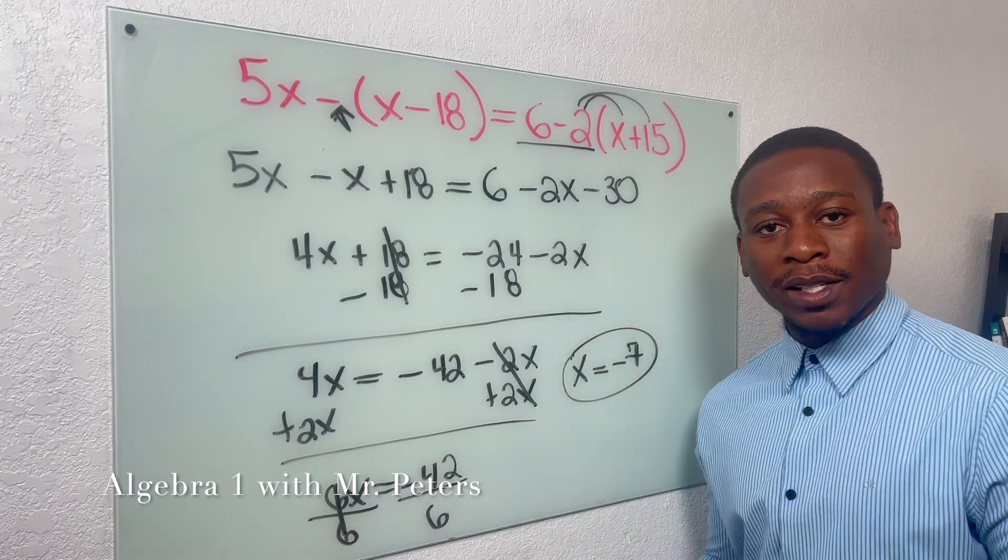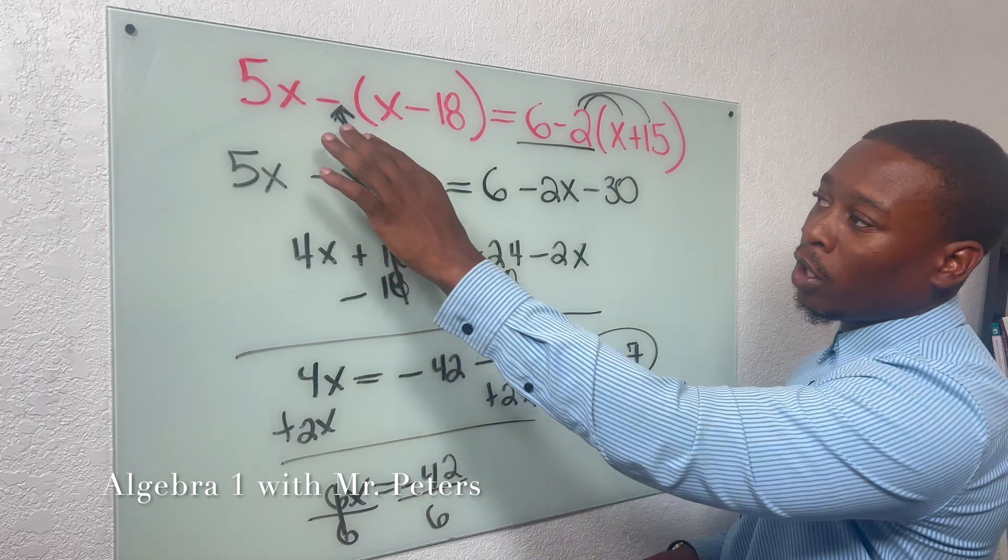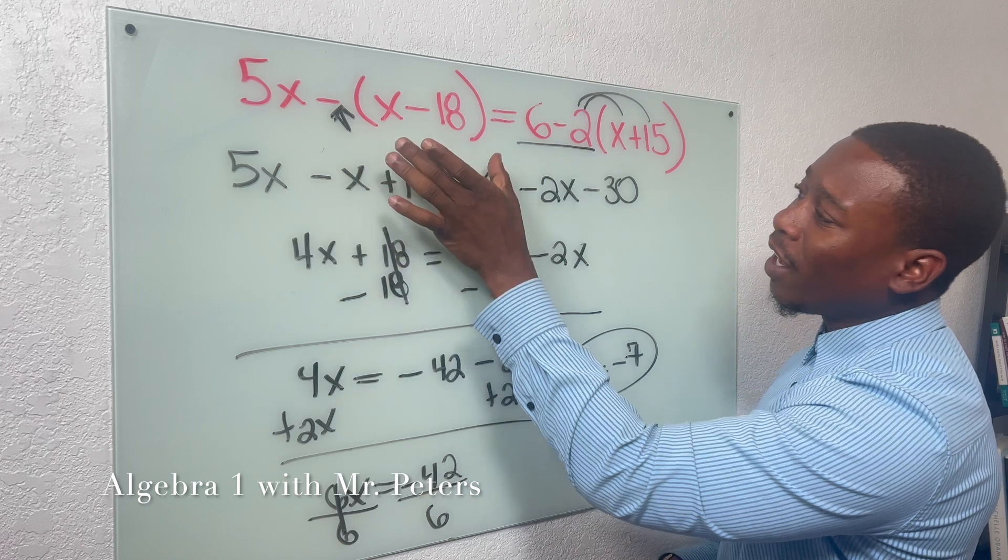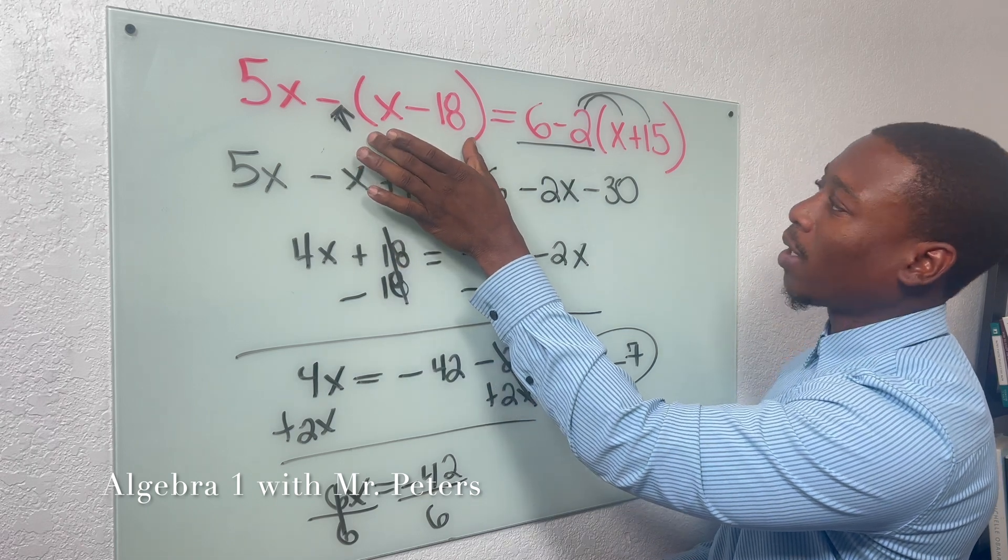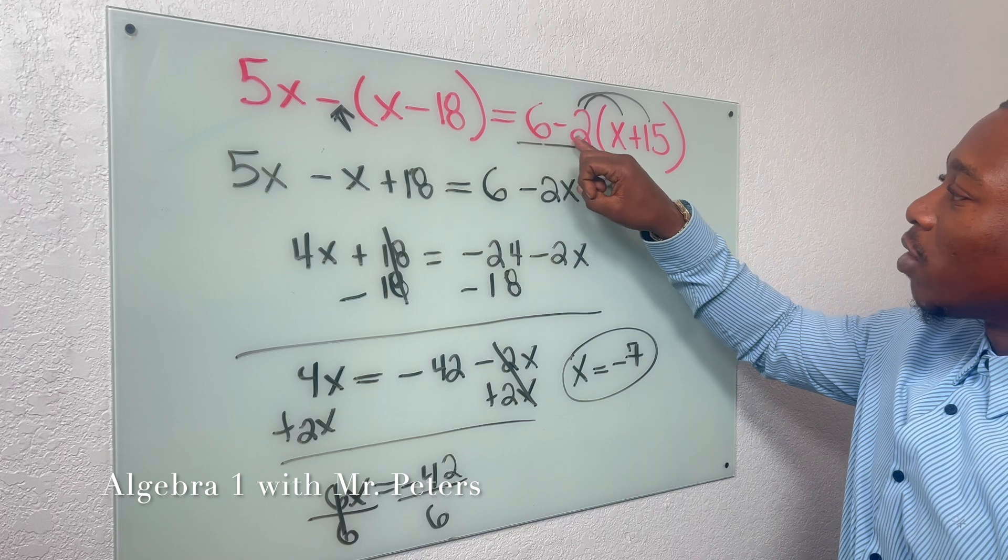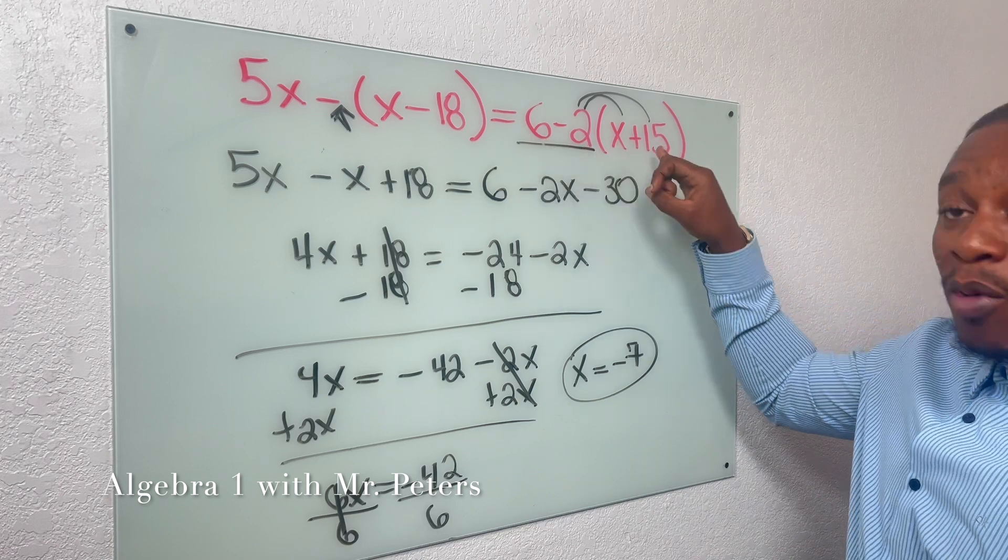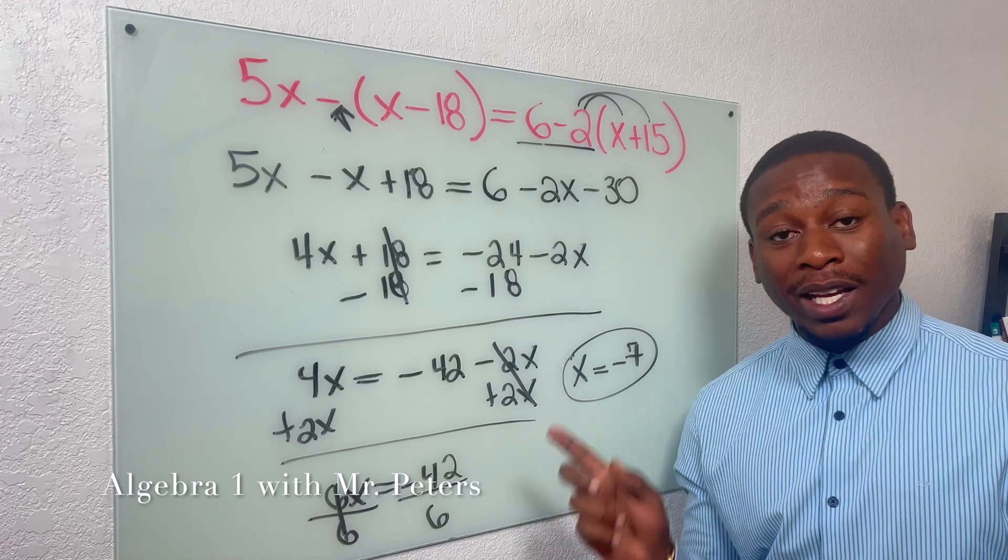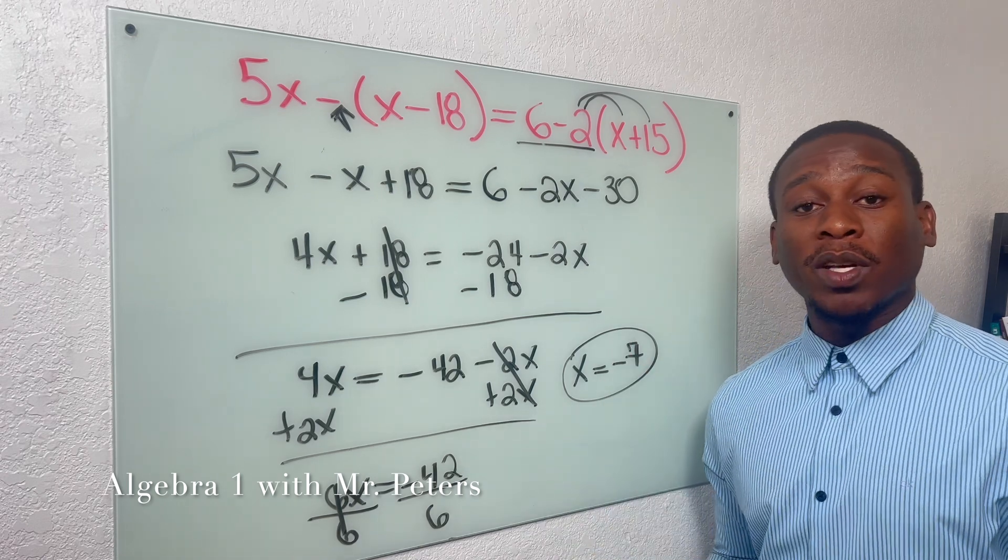So just remember, in this second example, if we have a negative sign out in front of the parentheses, it's going to change the signs of what's inside the parentheses. And if you have something where we have subtraction and multiplication, please make sure you guys do the multiplication first. It is a trick, and it does get the best of students.